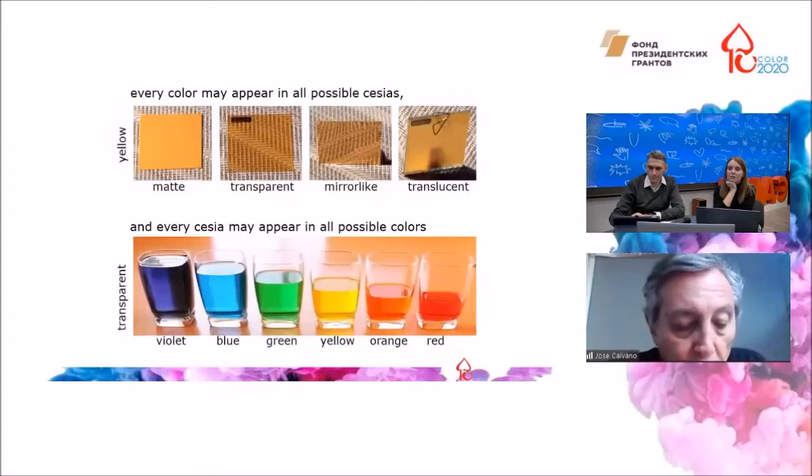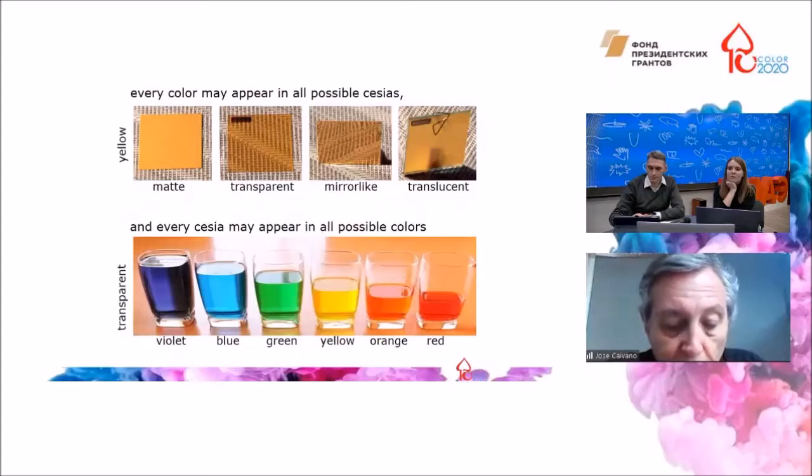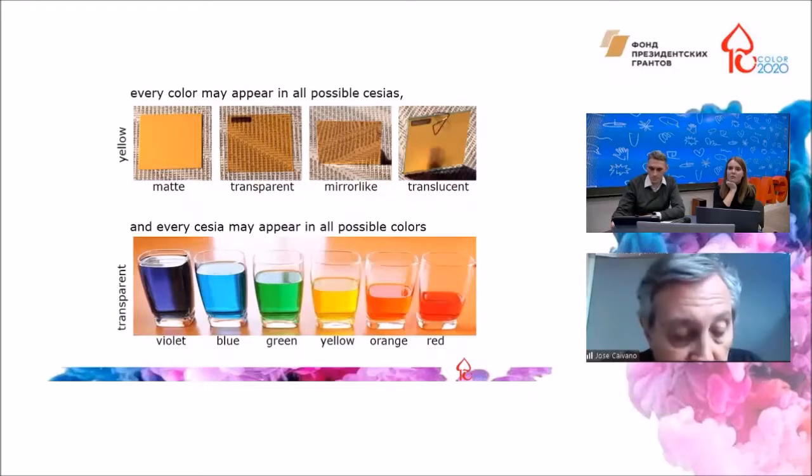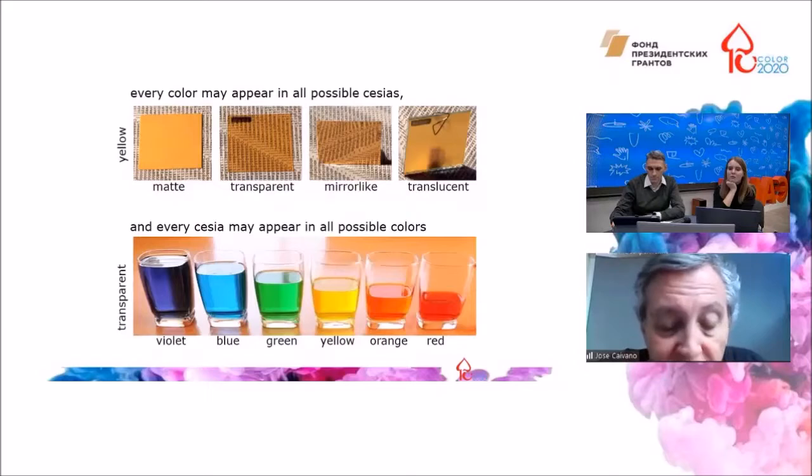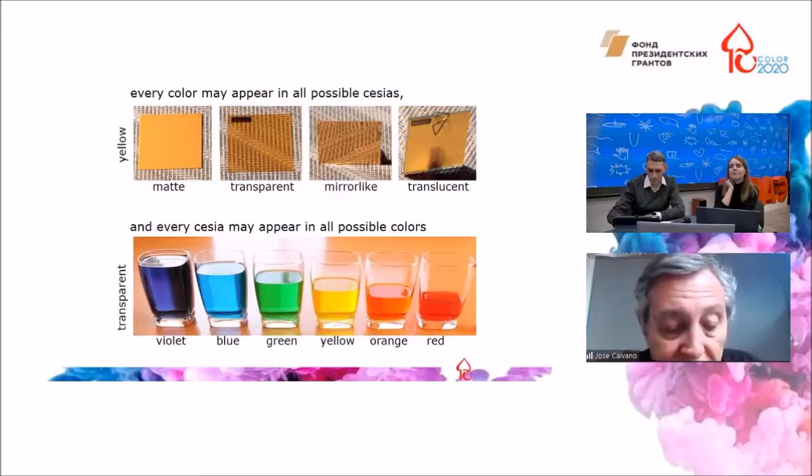Now, what is the relationship of color with cessia? Well, every color may appear in all possible cessias. For instance, a yellow color may have a matte, transparent, mirror-like, or translucent appearance. And every cessia may appear in all possible colors.